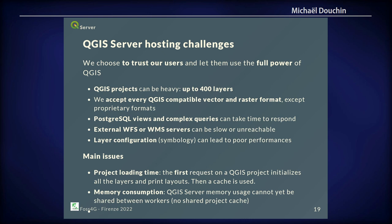The challenges of QGIS Server: we choose to trust our clients and users, so they use the full power of QGIS. They can have up to 400 layers in a project — most don't, but some do. We accept every QGIS-compatible vector and raster format except proprietary raster formats. They can use PostgreSQL views or complex queries, leading to loading times that depend on query complexity. They can also use external WFS or WMS server layers, and can do complex rendering like representing buildings in Italy at very small scales.